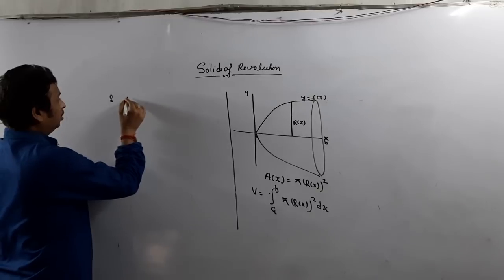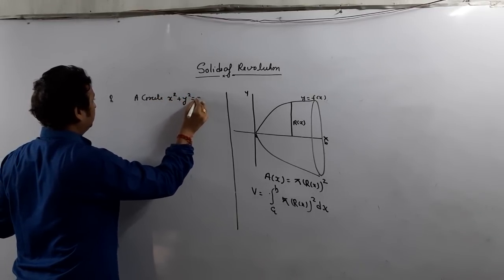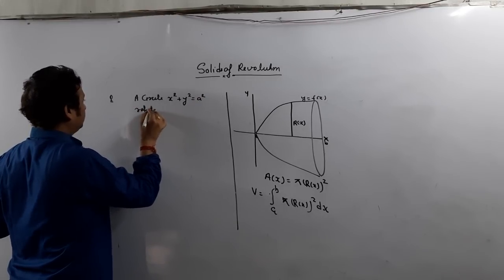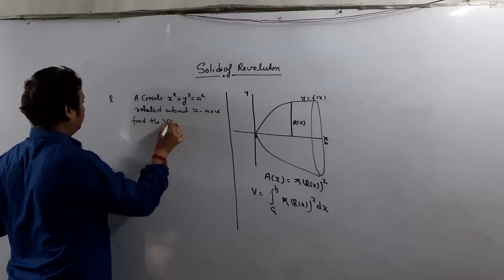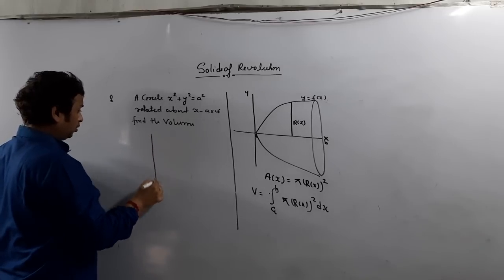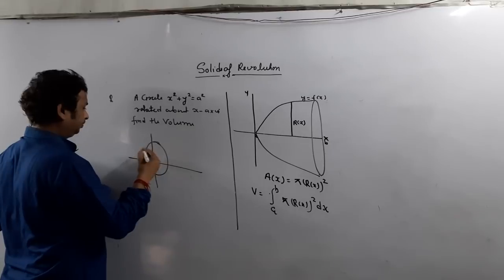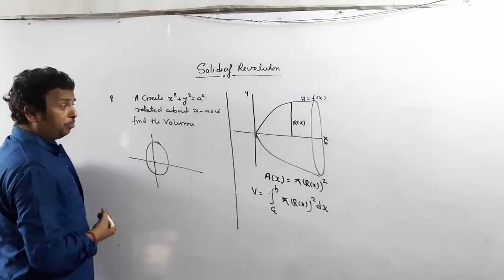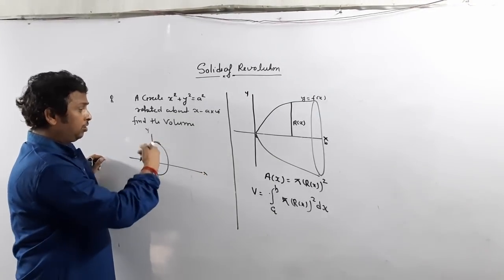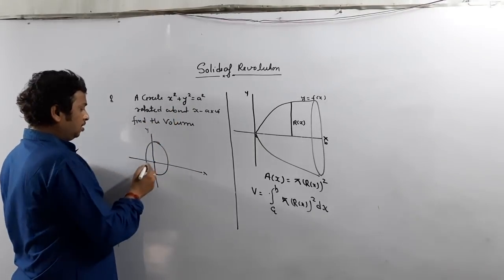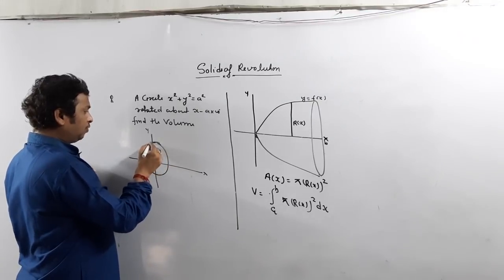Now I am going to do another question: the volume of the sphere. How is the sphere formed? Take a circle x² + y² = a², rotated about the x-axis. Find the volume. We all know that when a circle is rotated about the x-axis, it forms a sphere. Now what is the y value? This y value is your radius r(x).